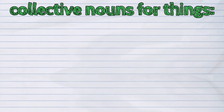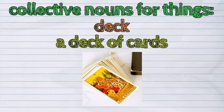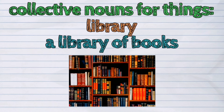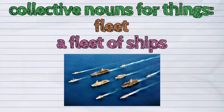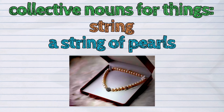More examples: Palette — a palette of colors. Deck — a deck of cards. Library — a library of books. Fleet — a fleet of ships. String — a string of pearls.